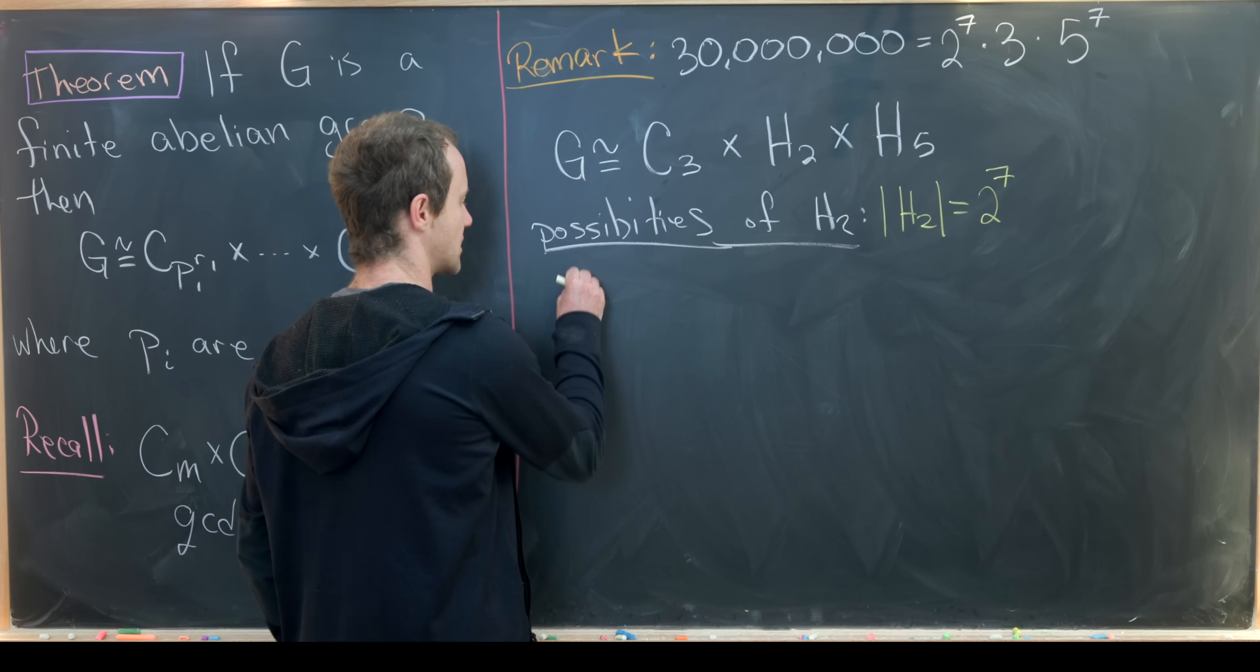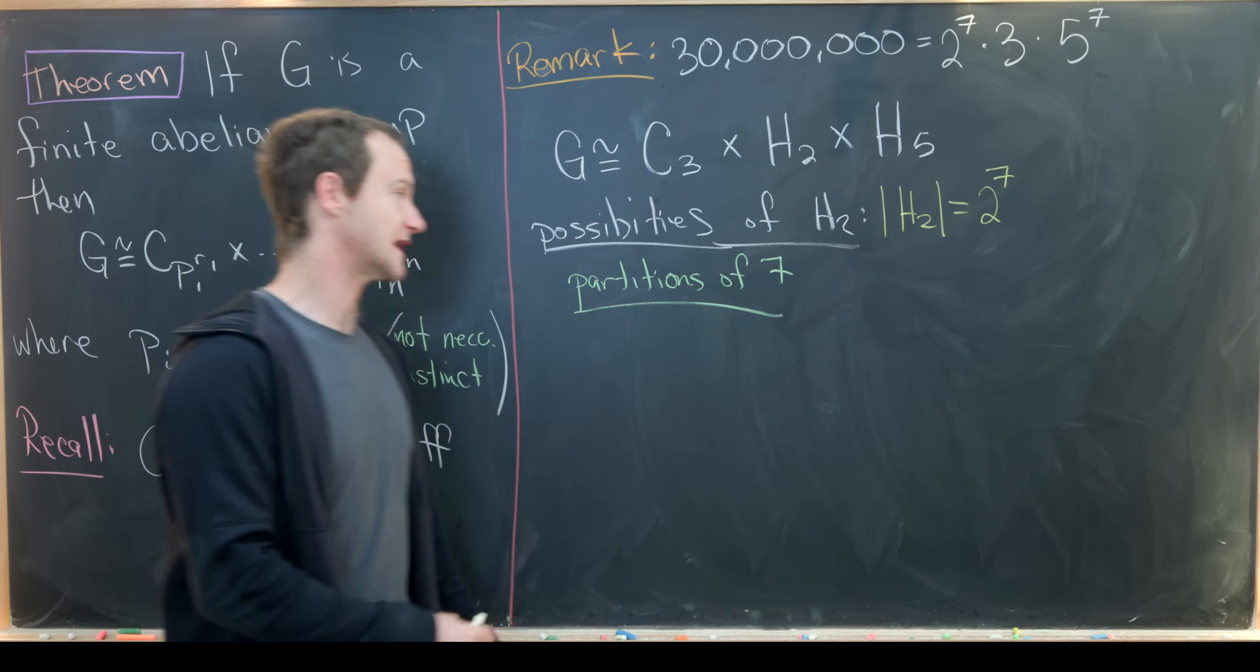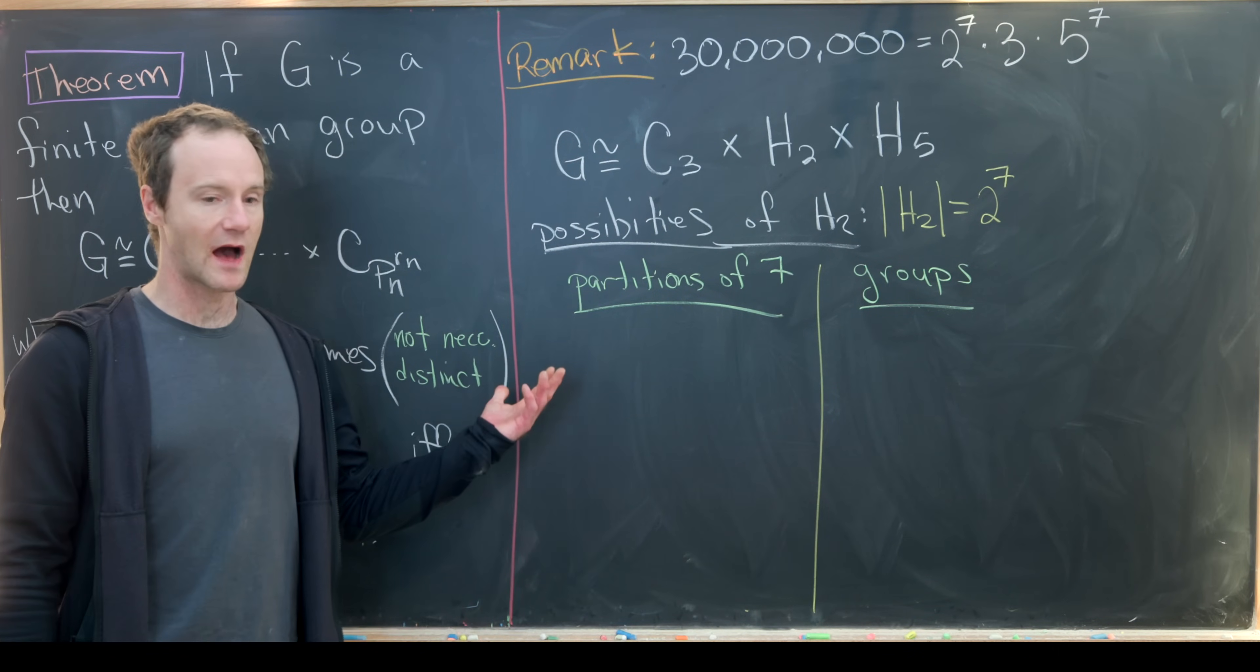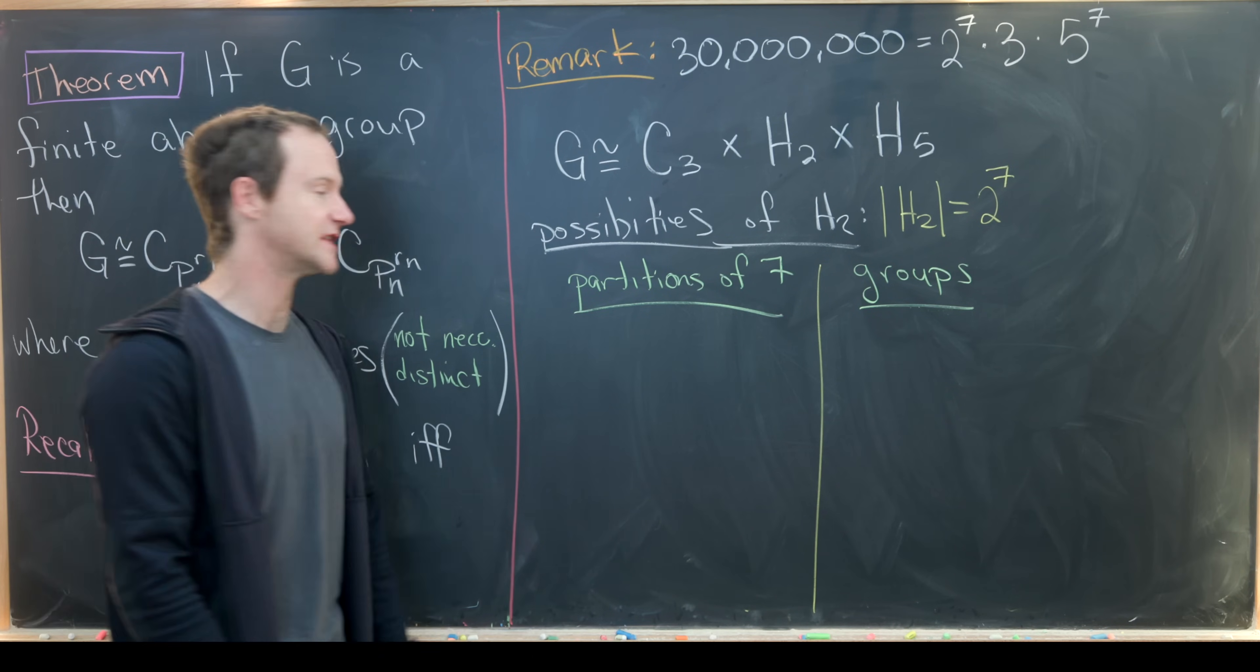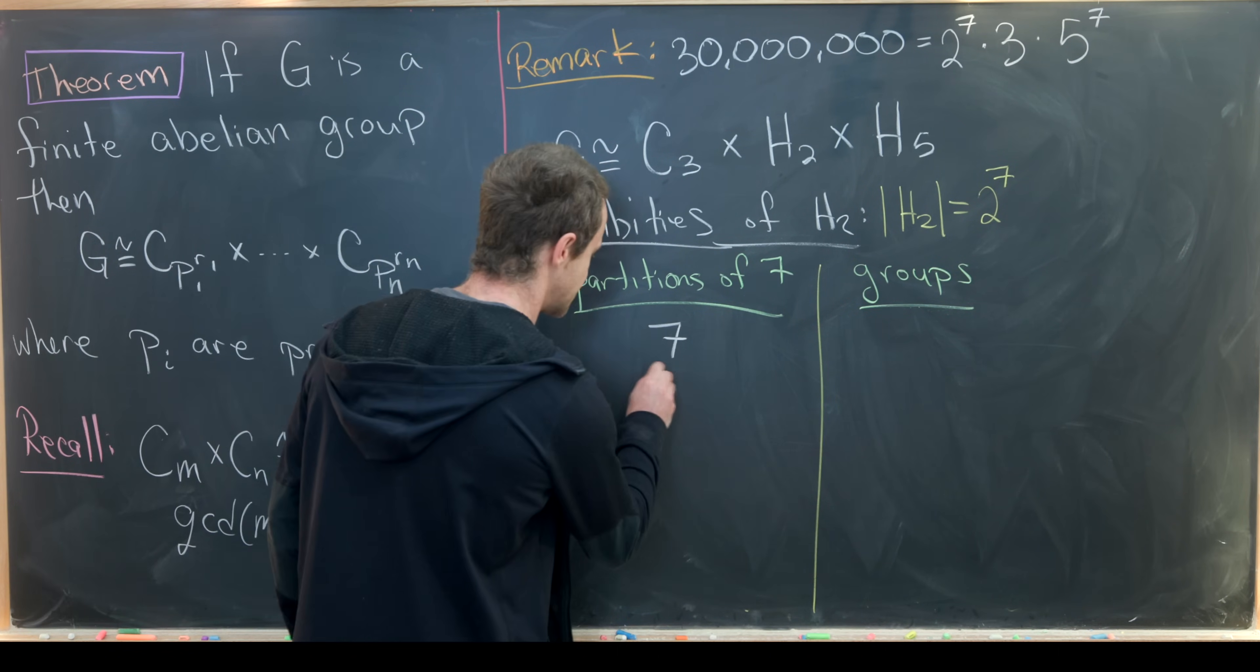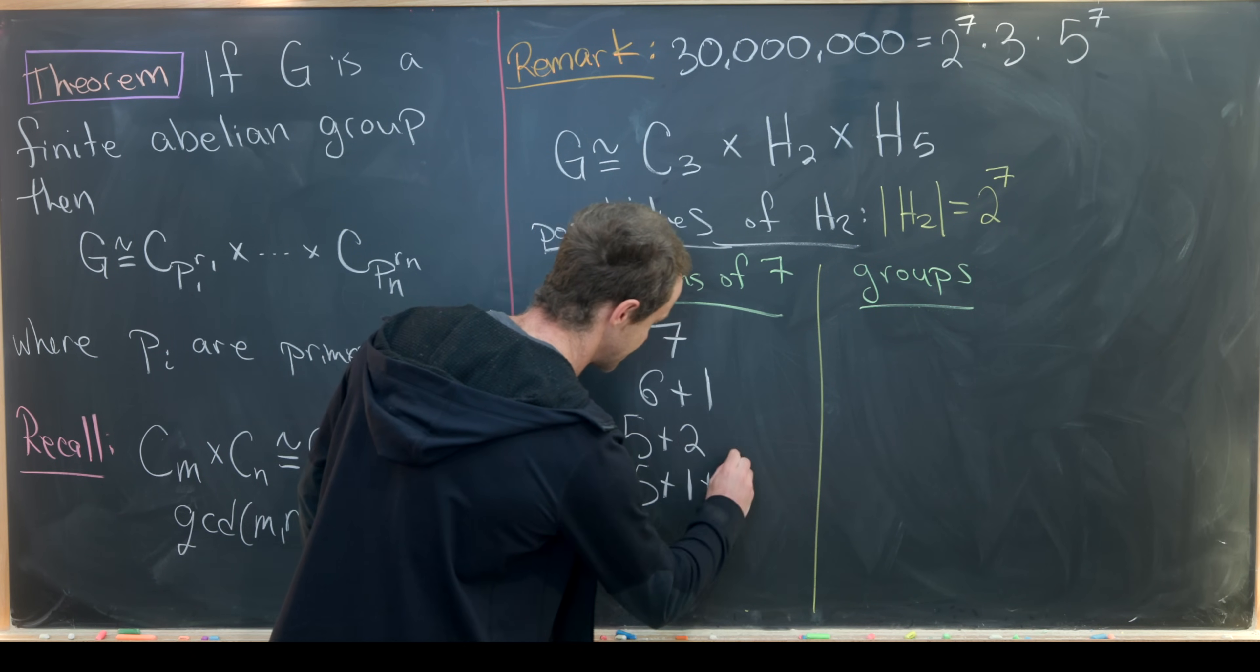I'm going to make a chart of partitions of 7 and the groups related to these partitions. These are the finite abelian groups. How many partitions are there of 7? I'll let you check - there are 15. We'll look at just a couple. There's the partition which is just 7. There's 6 plus 1. There's 5 plus 2. There's 5 plus 1 plus 1.